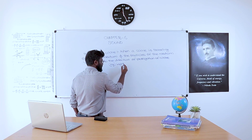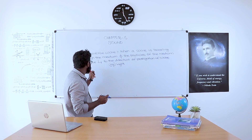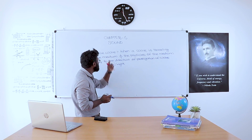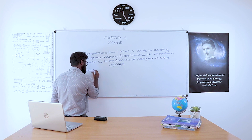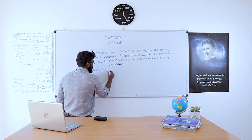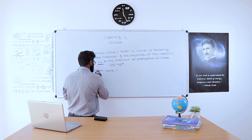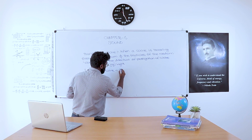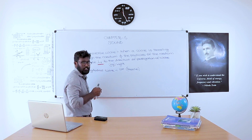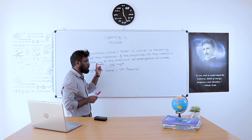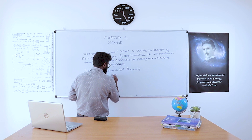Light wave is an example of transverse wave. For longitudinal wave, the definition is the same with one difference: when a wave is traveling through the medium and the particles of the medium vibrate parallel to the direction of propagation of the wave, then the wave is called a longitudinal wave. Sound wave is an example of longitudinal wave.